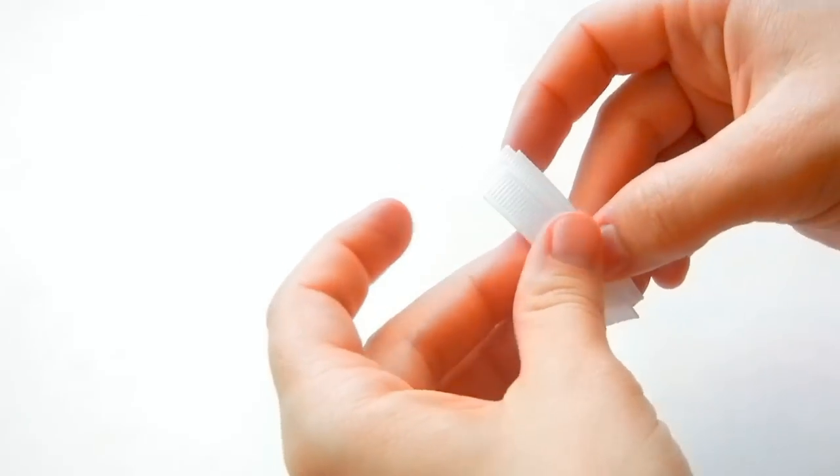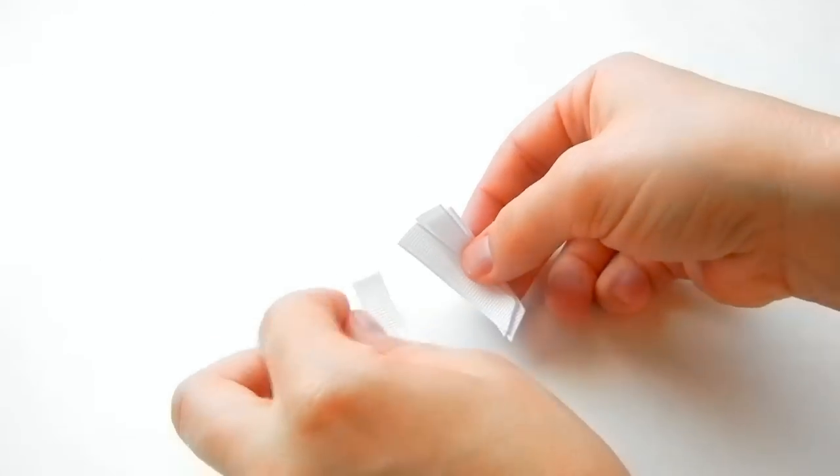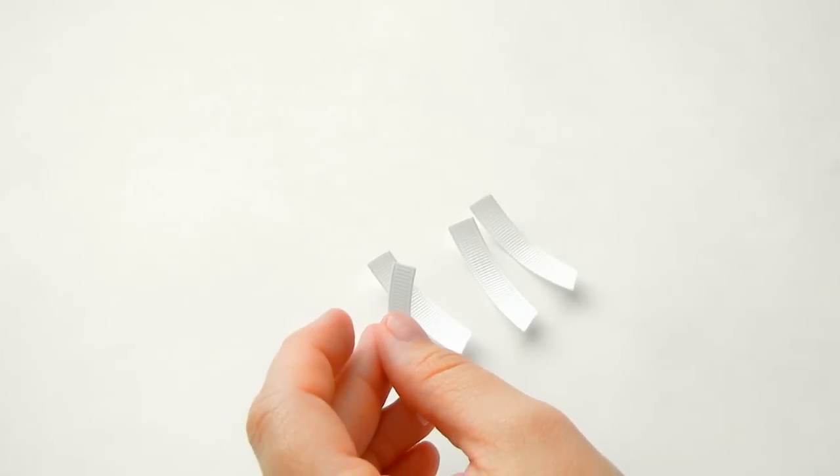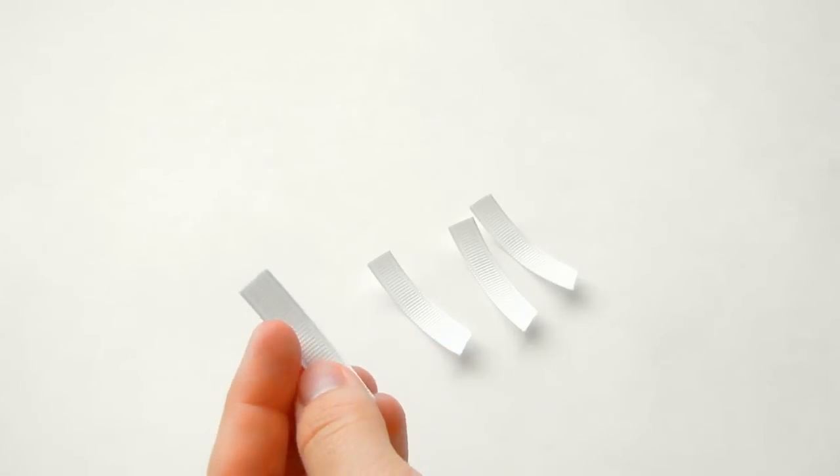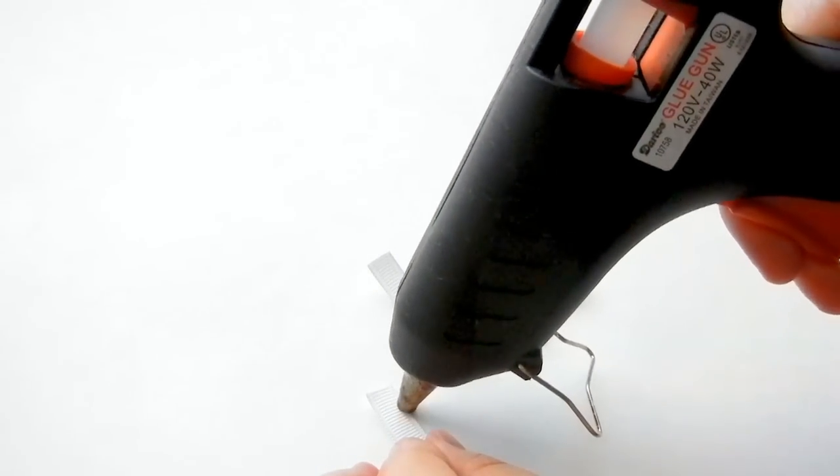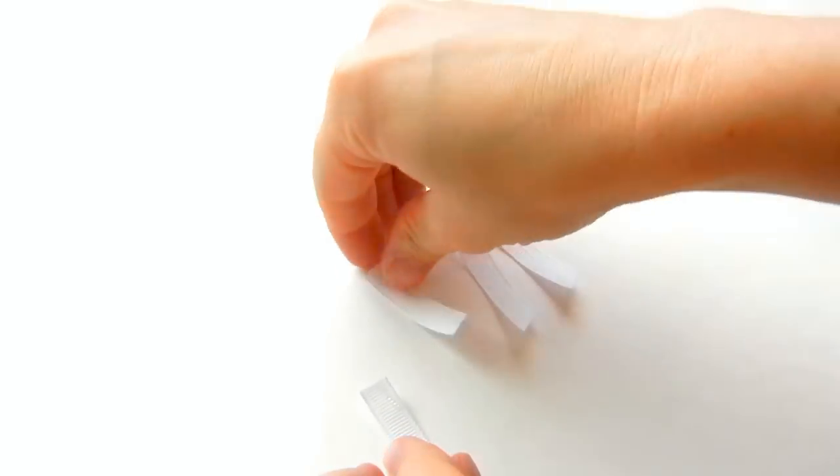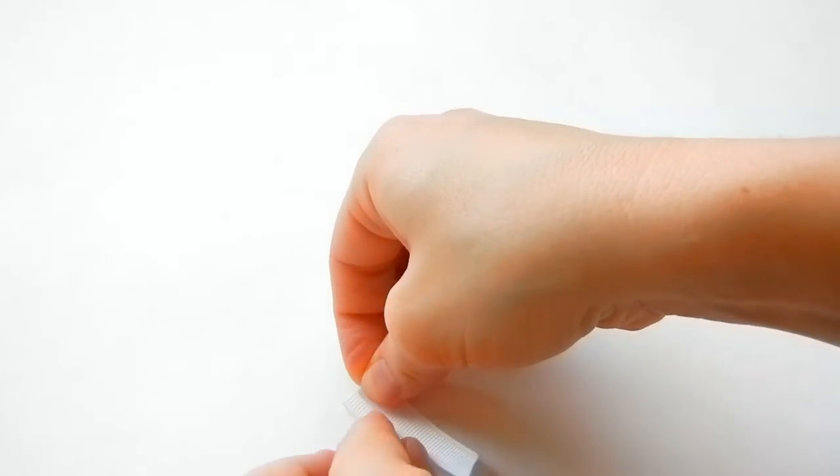Now what we're going to do is glue them together. Have your glue gun ready, and we just want to put a small dab of glue on the side towards the top, and then take your other piece and put it on just right next to it.